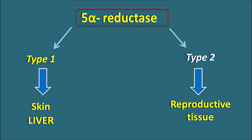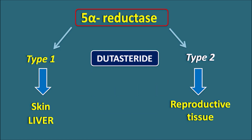In the male genitalia, type 2 5-alpha reductase is responsible for the activation of testosterone. Dutasteride inhibits both type 1 and type 2 enzymes, so it is non-selective for both isoforms, thereby inhibiting androgenic activities at the reproductive tissue, skin, and liver.